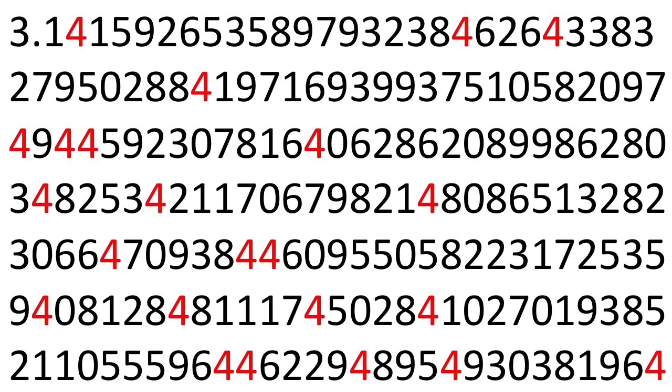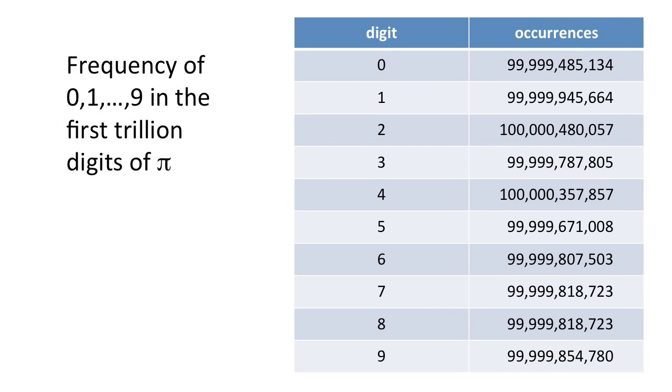For example, you expect the number four, here in red, to appear one-tenth of the time, or the string twenty-eight to appear one-hundredth of the time. Proving that a number is normal is extremely difficult, but evidence for pi's normality is seen in this table. Each digit appears one-hundred billion times.